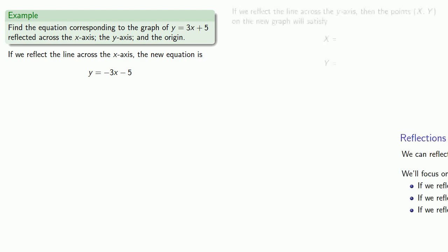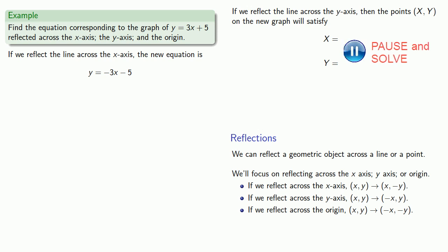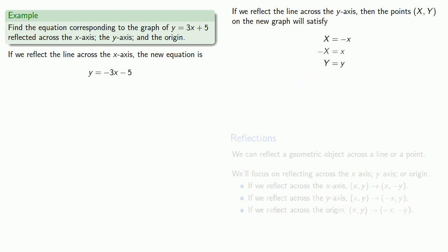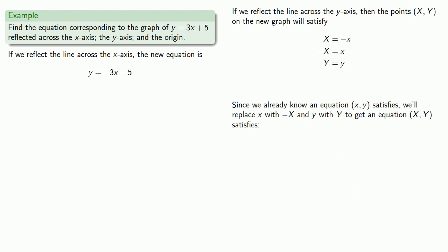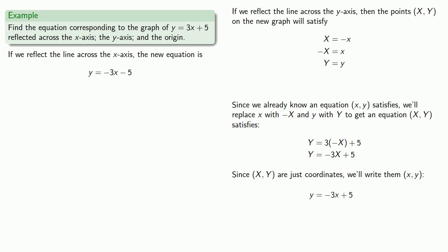If we reflect the line across the y-axis, then the points capital X and Y on the new graph will satisfy those coordinate relationships. We'll solve these equations for lowercase x and y. We already know an equation that lowercase x and y satisfies, so we'll replace. Again, capital X and Y are just coordinates, so we'll write them as lowercase x and y. Since our equation is already in the form y equals stuff, we can leave it.